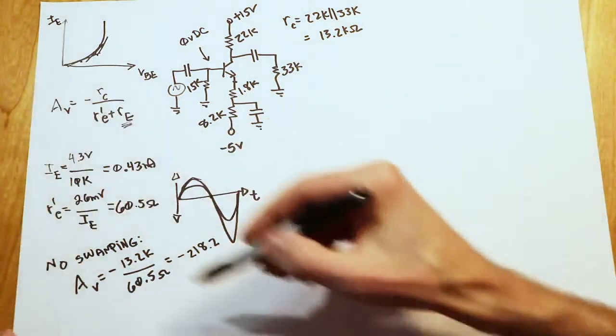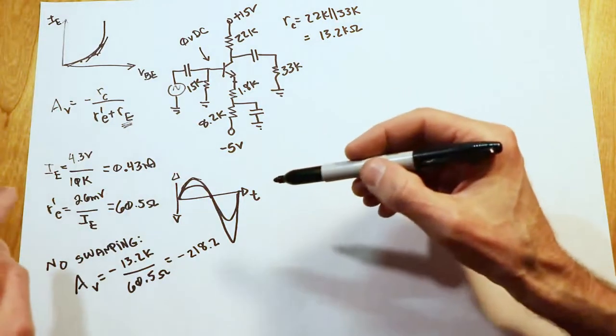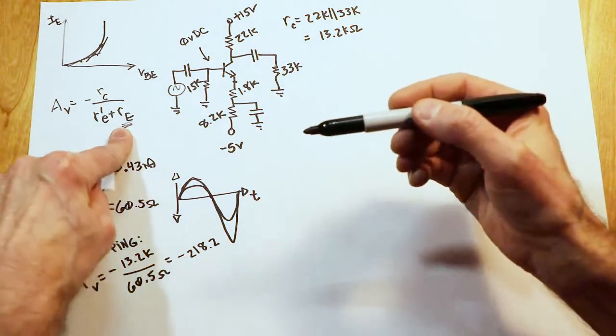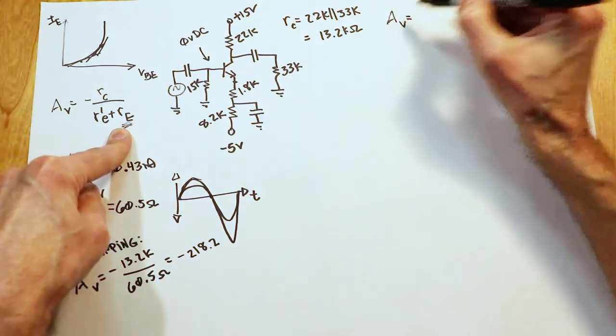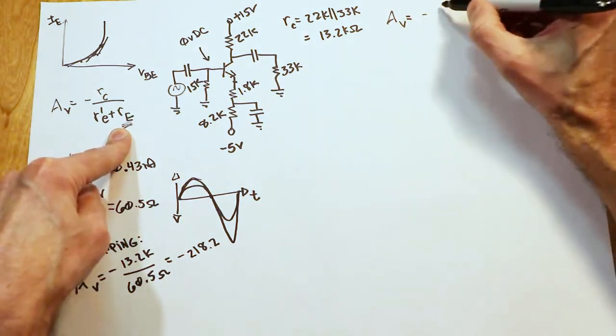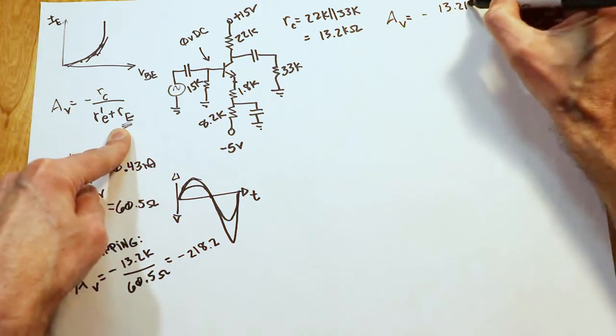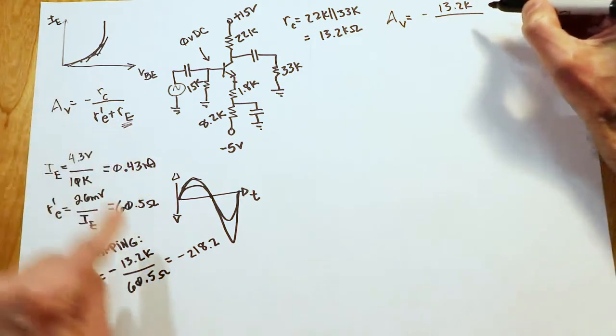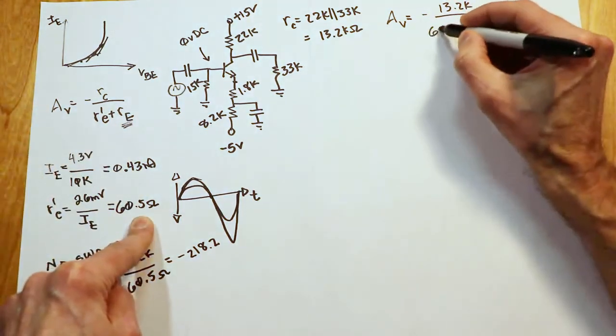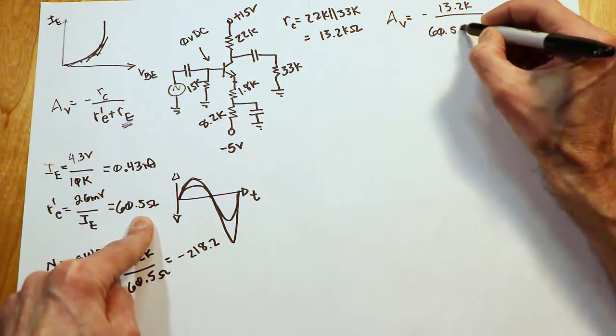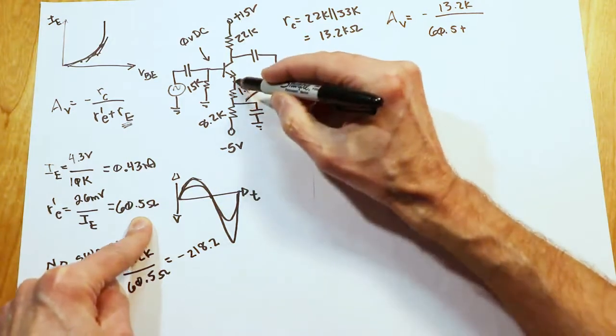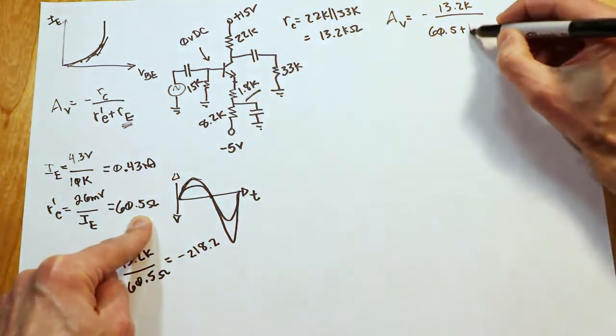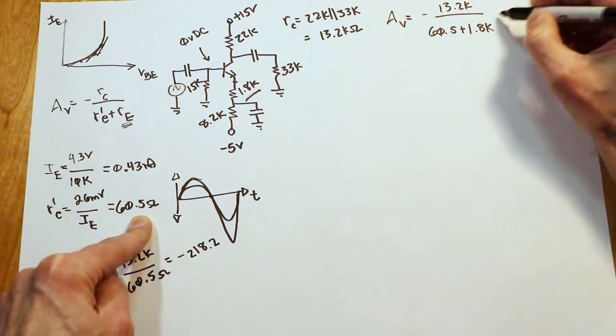In any case, continuing, let's take a look at what happens through the use of swamping. So now we're going to use the general formula with the value of Re. In this case, the voltage gain is going to be the same value, 13.2k ohms, divided by the R'e, 60.5, plus the swamping resistor. So we now have this 1.8k in there. It's not bypassed. The emitter is not at AC ground. So I have to throw in this 1.8k.